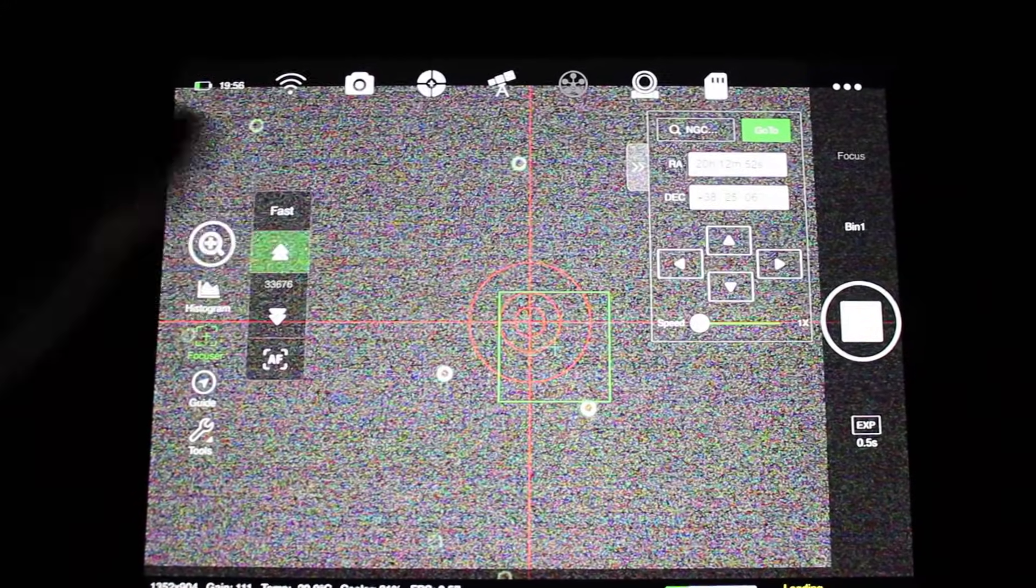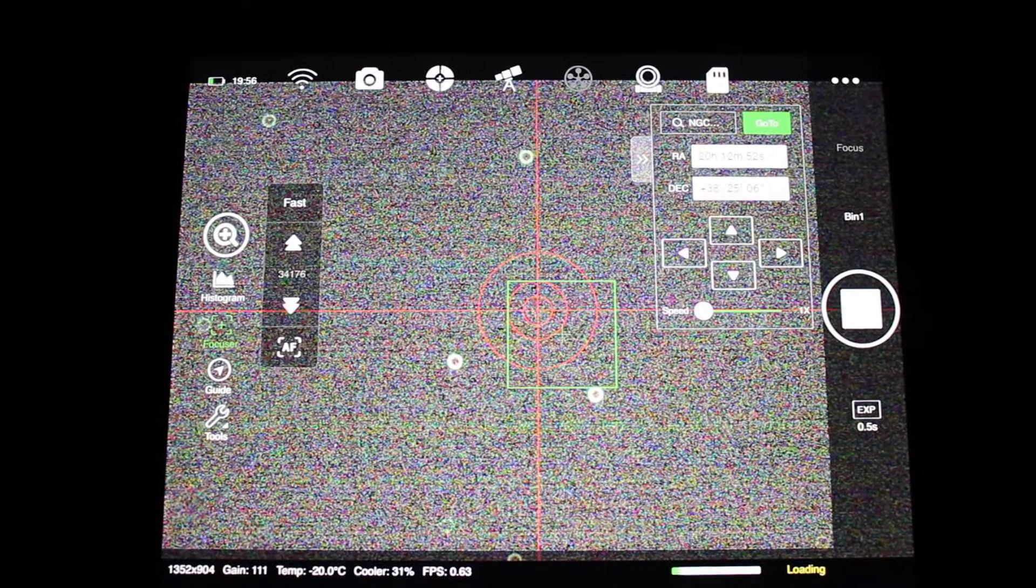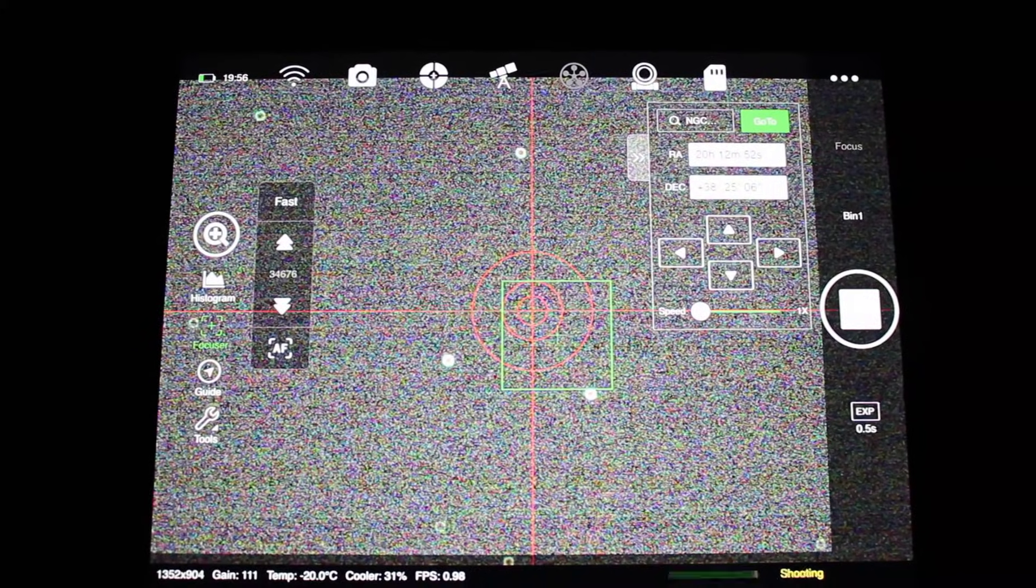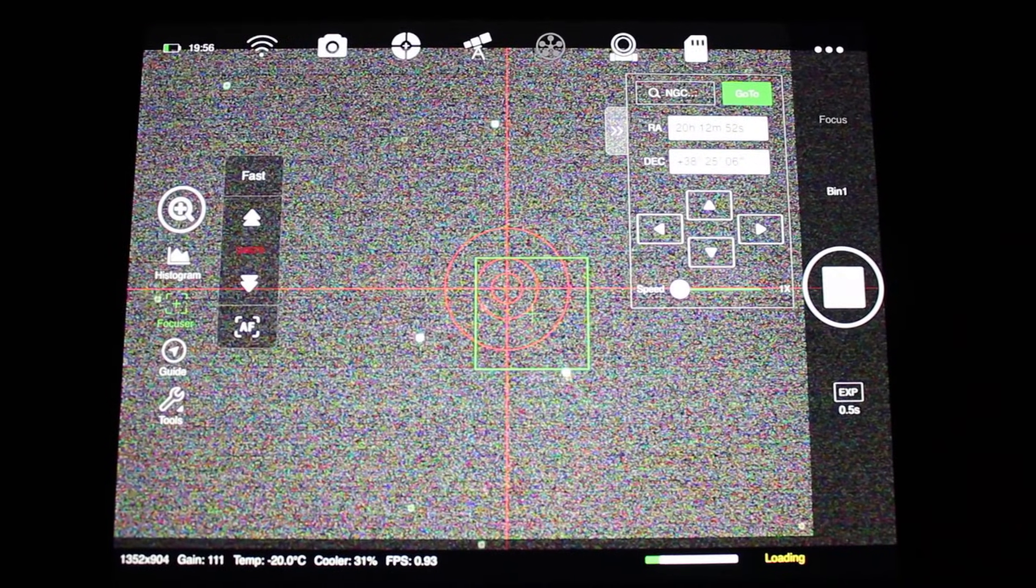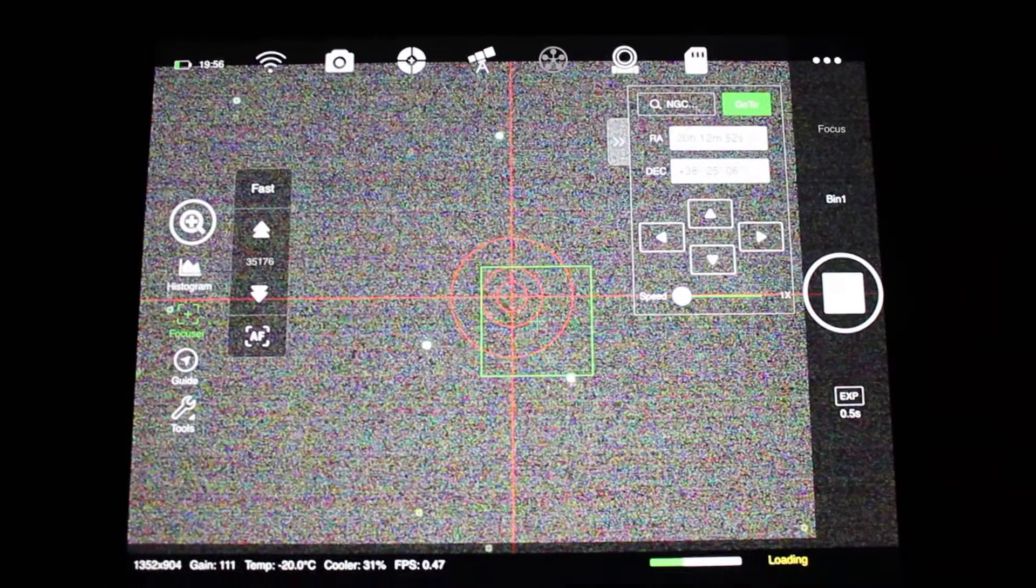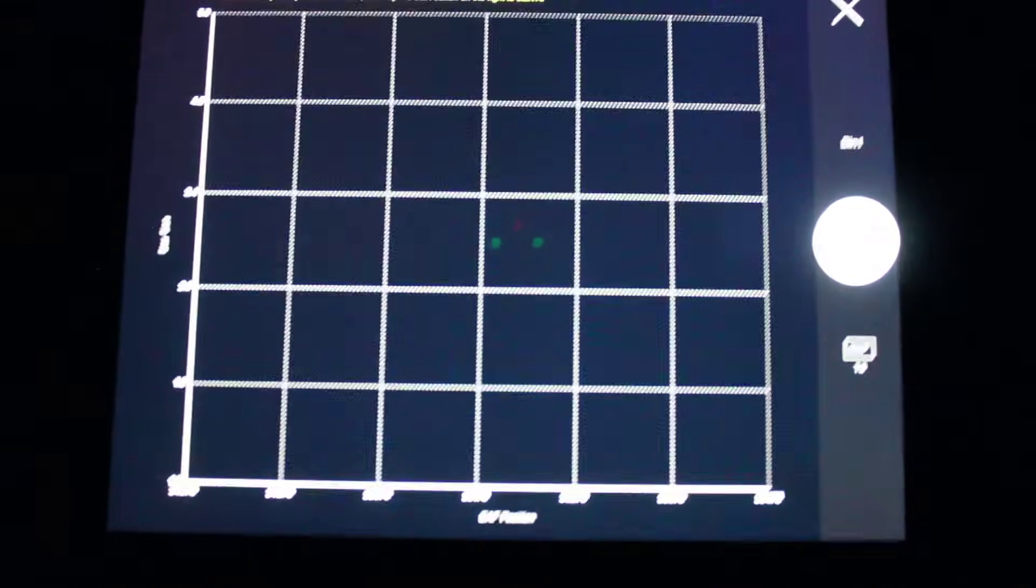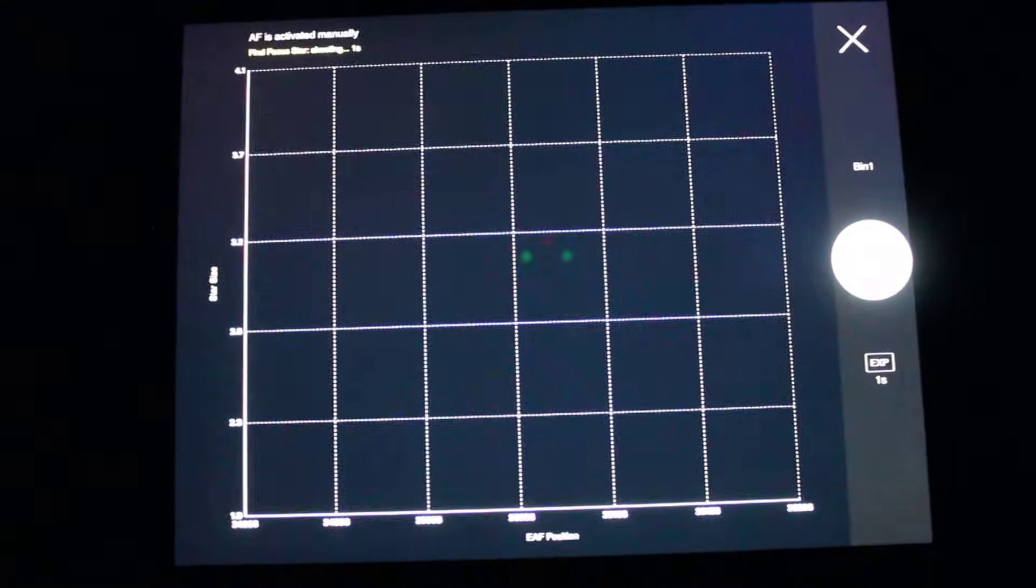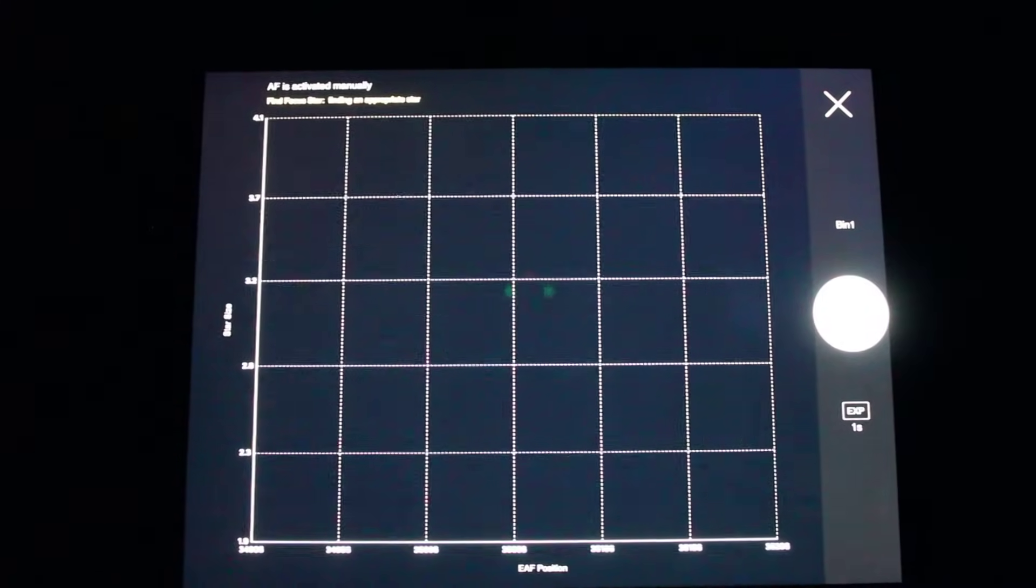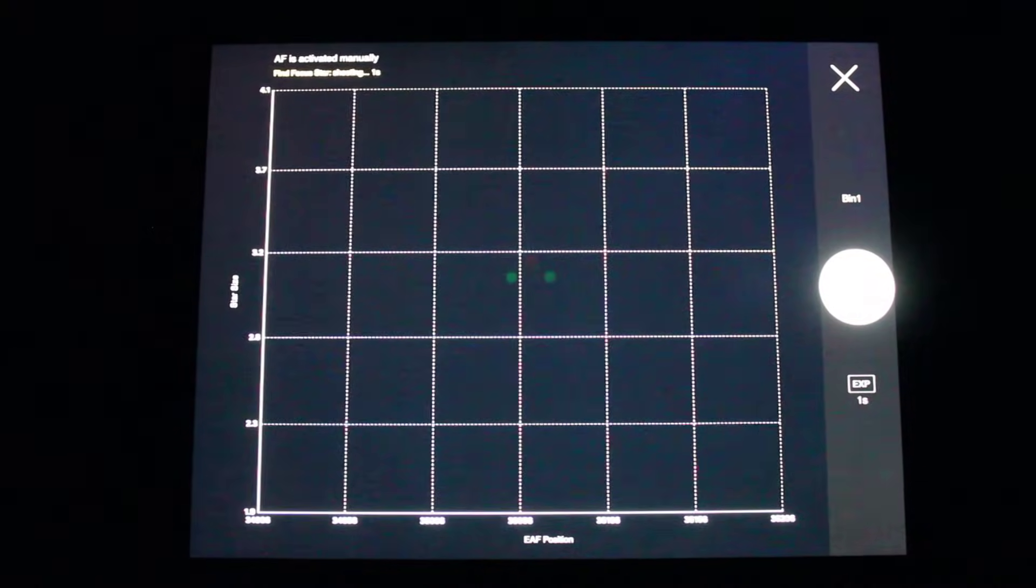You can see I'm pretty out of focus here. So I'm just going to move the focuser inward and see if that helps. I have it set right now to move 500 steps per press. There we go. So now that I've got a decent focus, I'm just going to hit the autofocus button now and tap play. And let it find a star. It'll take a few different measurements of the star and find the best focus position for it. All on its own.